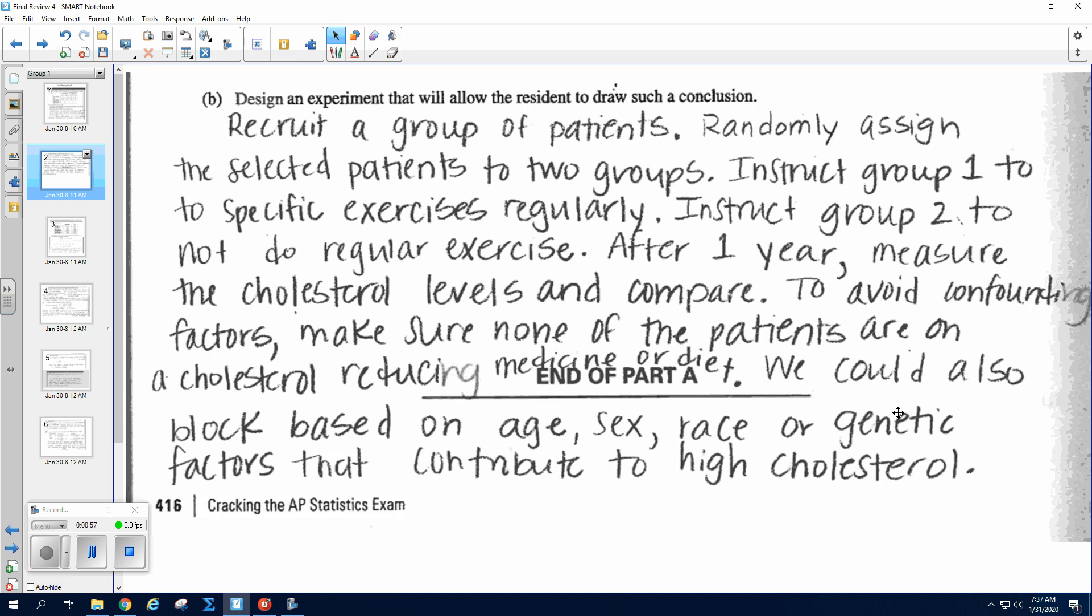All right, part B. So now we need to make it an experiment, which means you need to explain some random assignment or be talking about how you're randomly assigning patients to groups. So recruit a group of patients, randomly assign the selected patients to two groups. Instruct group one to specific exercises regularly and instruct group two not to do any regular exercise. After one year, measure the cholesterol levels and compare.